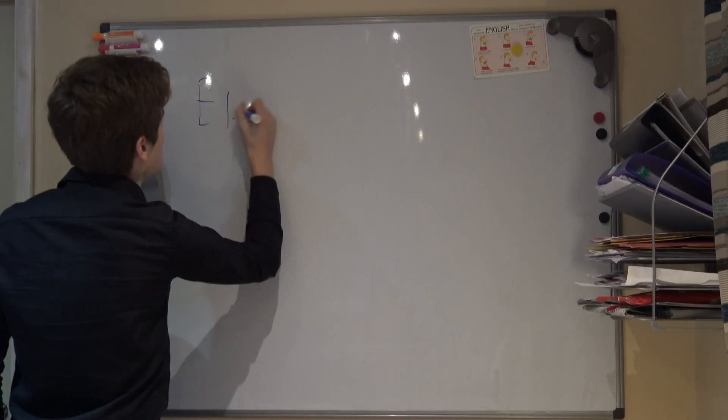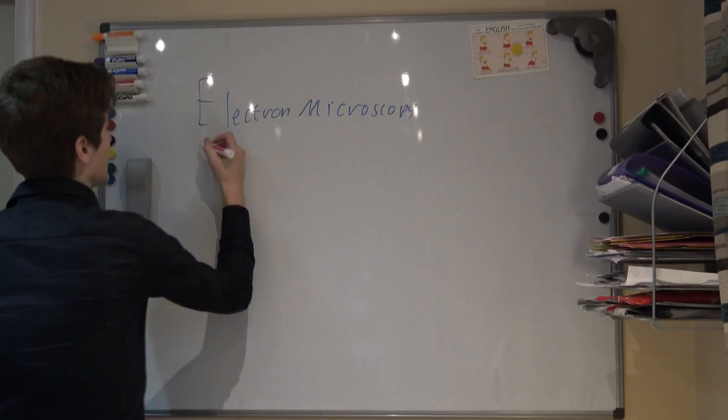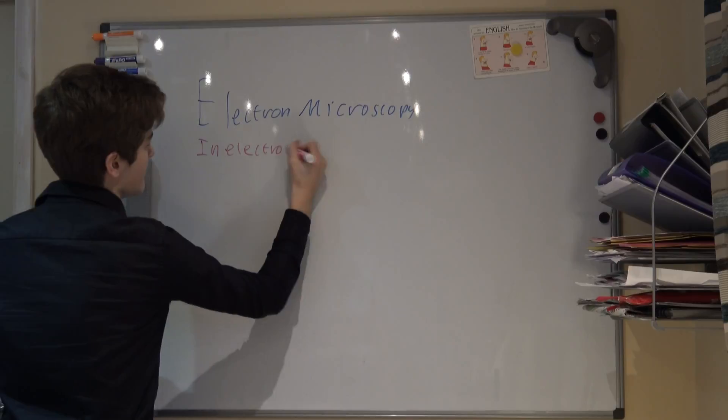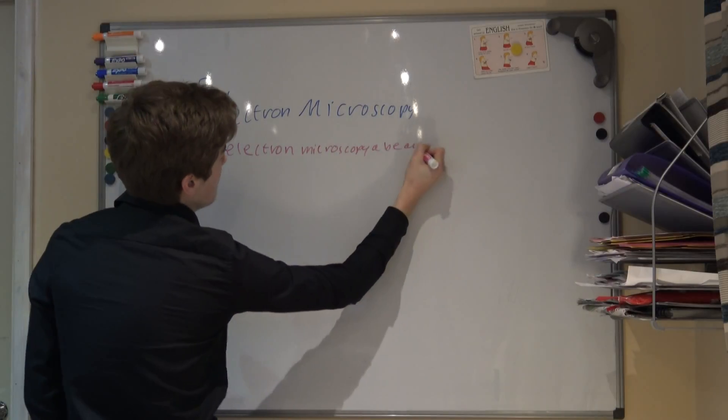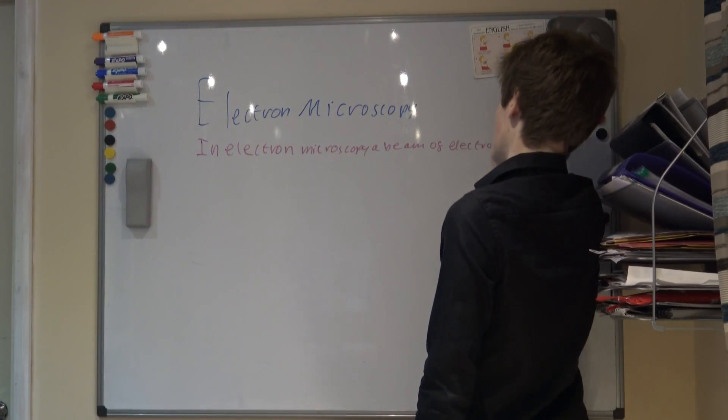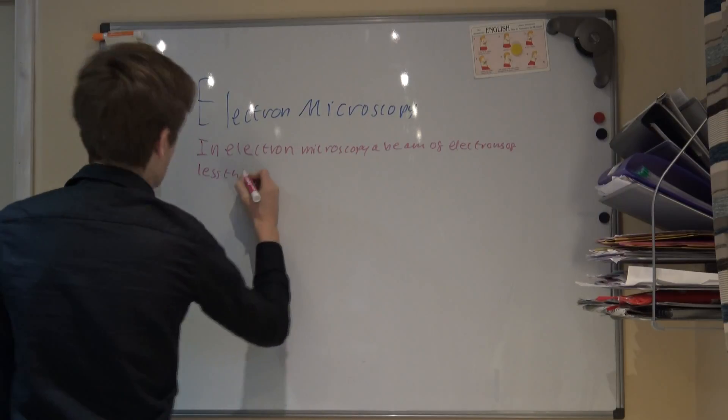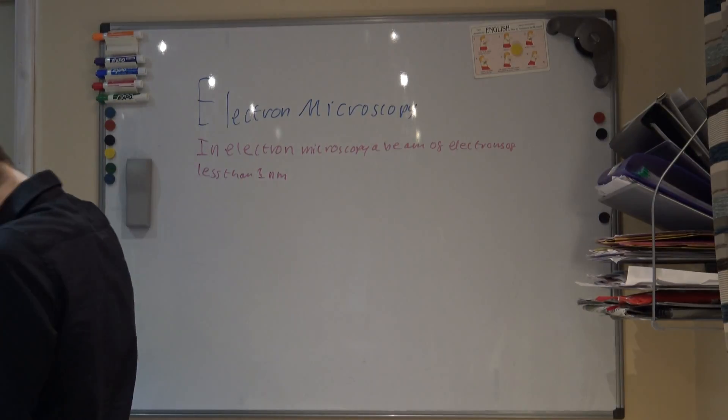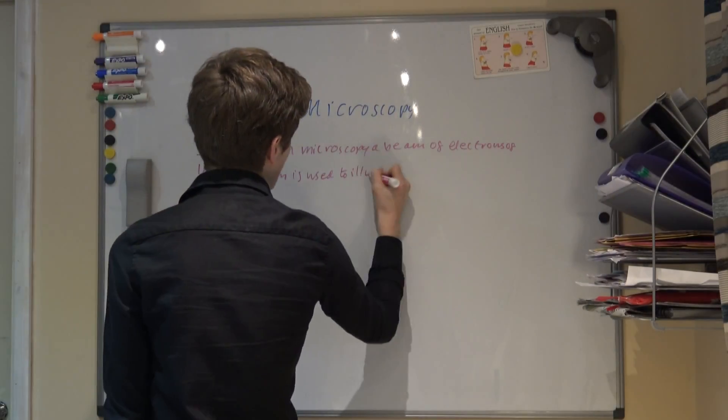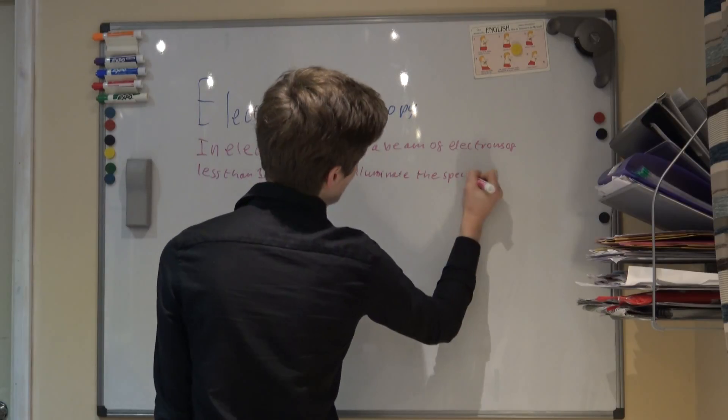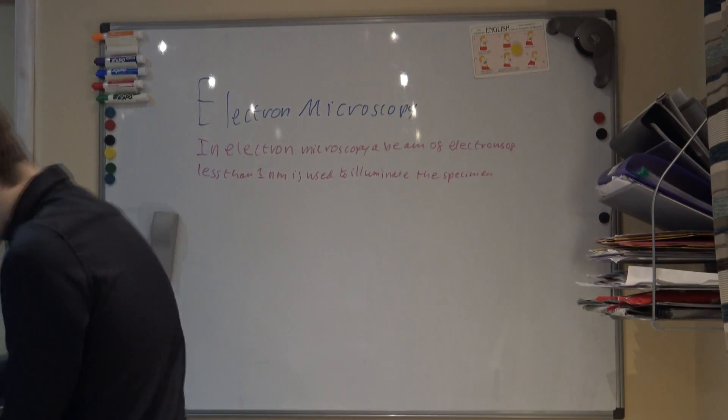So, I promised I would expand on how to improve the resolution in microscopes, using beams of electrons. This was first done in the middle of the 20th century, with the invention of the electron microscope. In electron microscopy, a beam of electrons with a wavelength of less than one nanometer is used to illuminate the specimen.